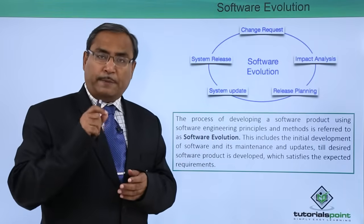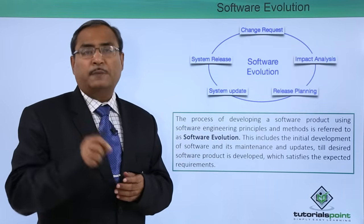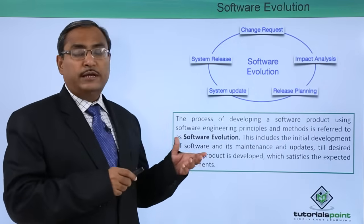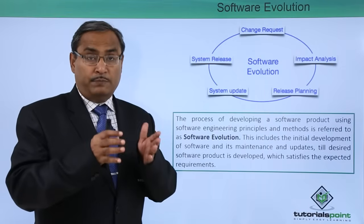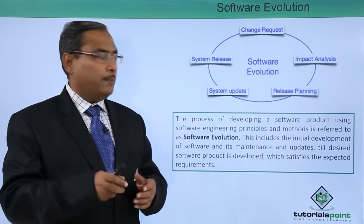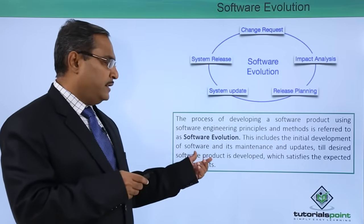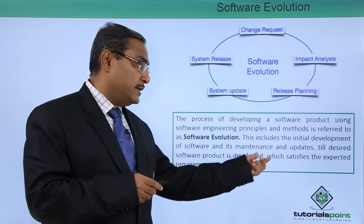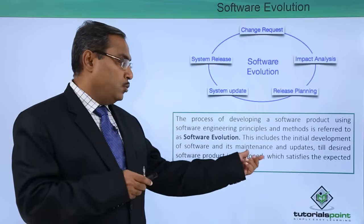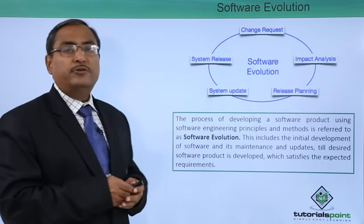Whenever a particular software will be developed for a specific application or purpose, it will be known as a software product. Here we will be using engineering, well-tested principles, procedures, and methods in the development process. This includes the initial development of software and its maintenance and updates till the desired software product is developed, which will satisfy the expected requirements.